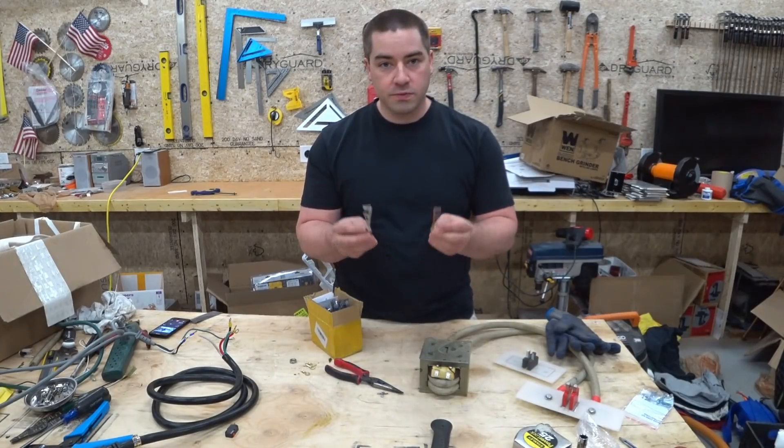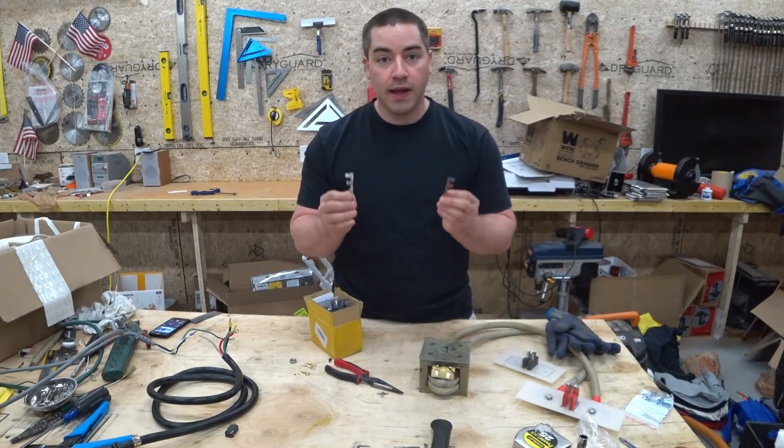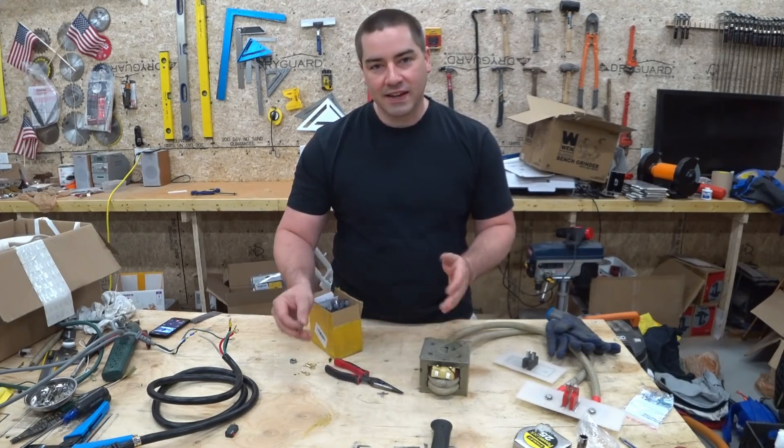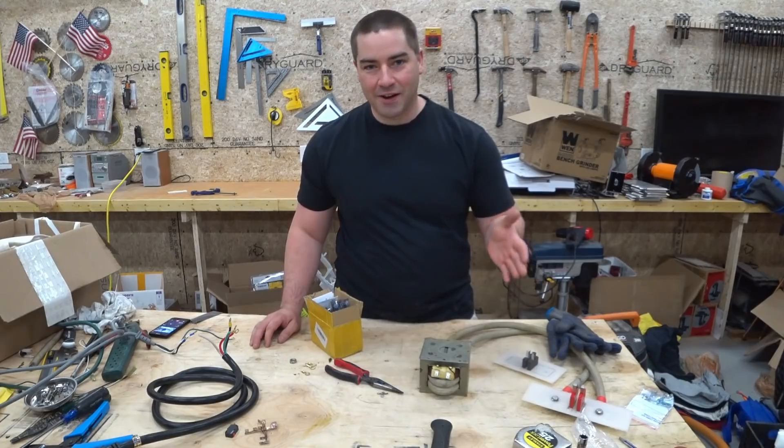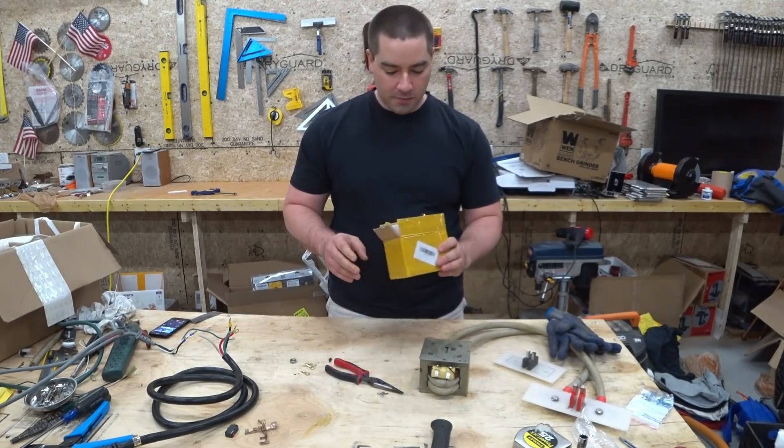The first big hurdle was making sure that the transformer can successfully spot weld copper together. And it can. So great. First hurdle down. The second hurdle is fine tuning this before we actually put these electrodes on the battery itself. In order to fine tune it, I picked up a few things from Amazon.